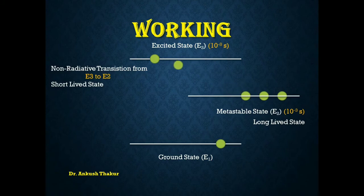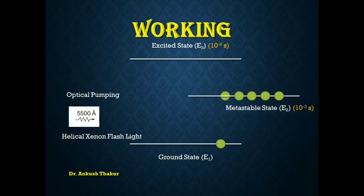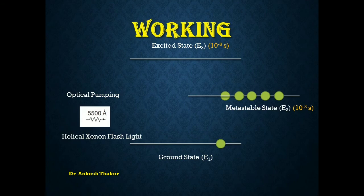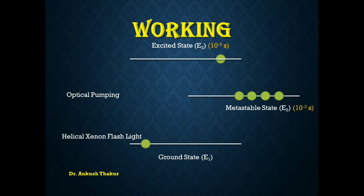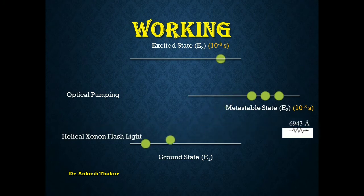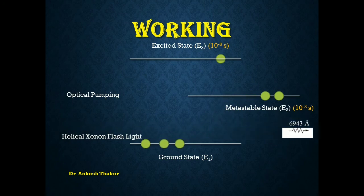Population inversion has been achieved between the metastable state and the ground state. Optical pumping continues — ground state atoms move toward the higher state, but there will be a de-excitation from E2 to E1 by initially spontaneous emission. That spontaneous emission produces a photon of wavelength 6943 angstroms.